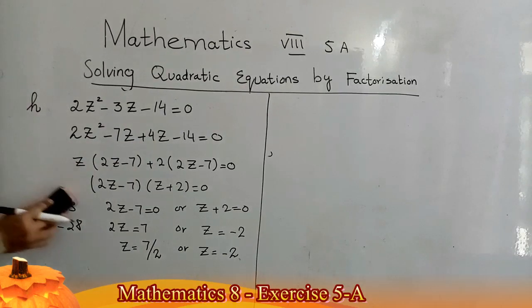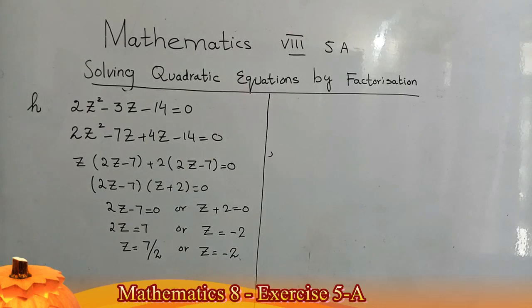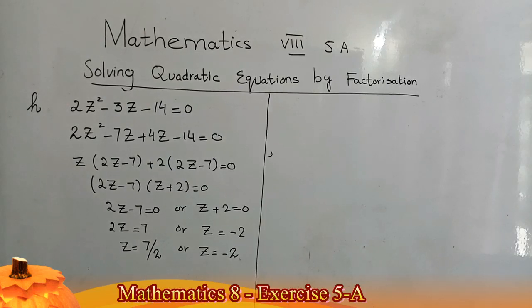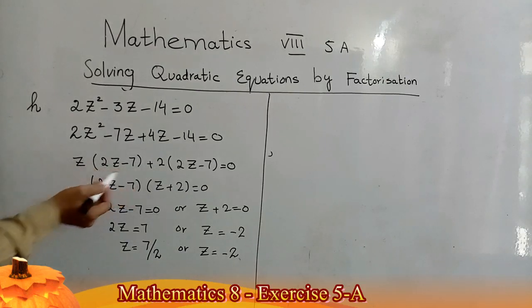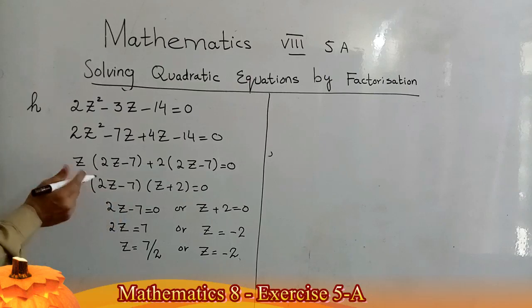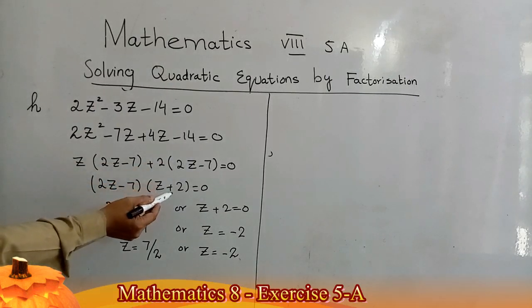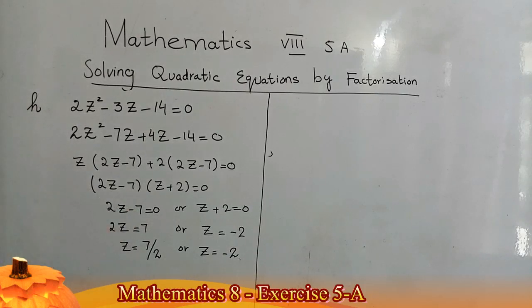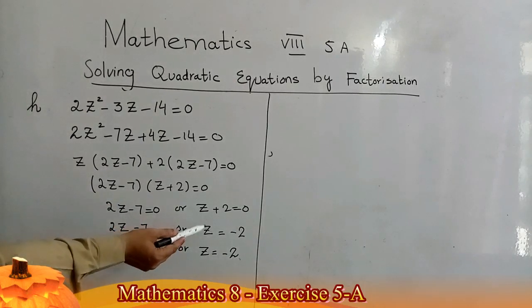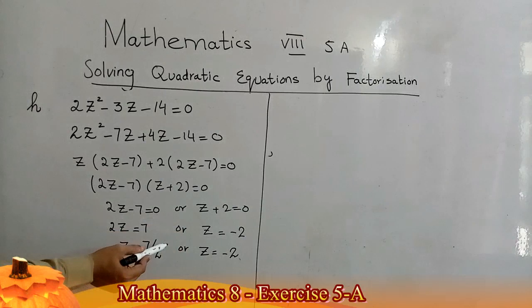From the first two terms I take z as a common factor: z(2z − 7). From the last two terms I take 2 as a common factor: 2(2z − 7). Now (2z − 7) is common, giving (2z − 7)(z + 2) = 0. Either 2z − 7 = 0 giving z = 7/2, or z + 2 = 0 giving z = −2. That is the solution of the given equation.